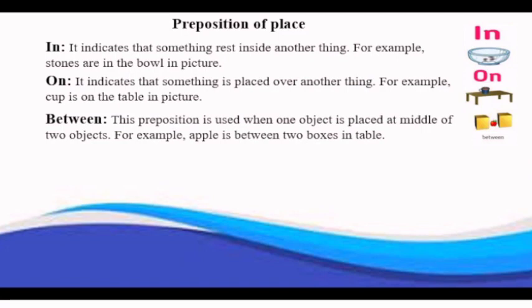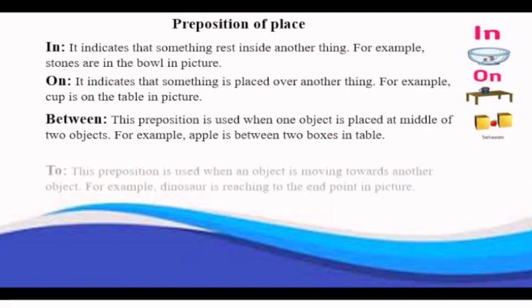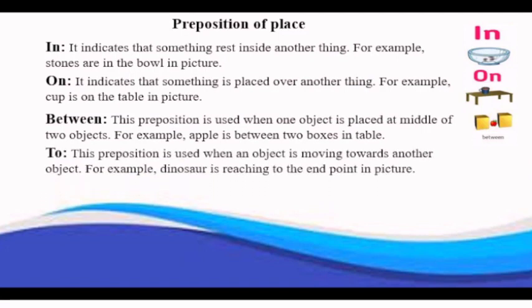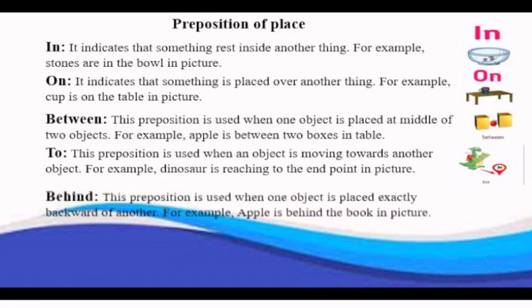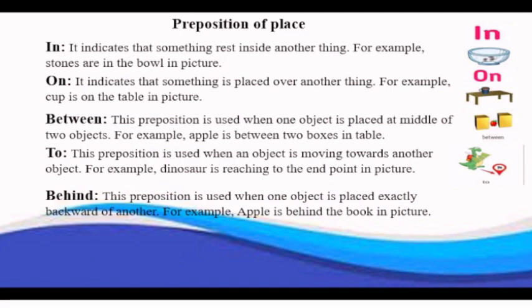To is used when an object is moving towards another object. For example, dinosaur is reaching to the end point, in picture. Behind is used when one object is placed exactly backward of other. For example, apple is behind the book, in picture.